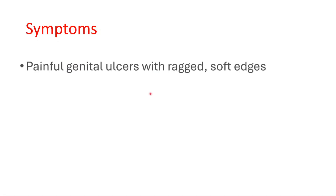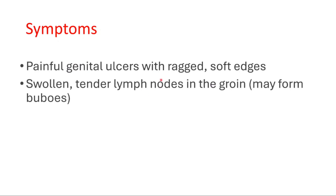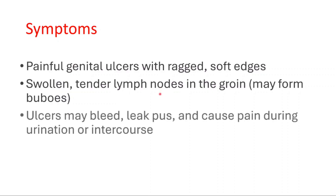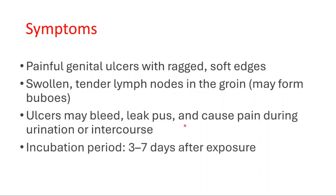If you talk about the symptoms, we have painful genital ulcers with ragged soft edges, swollen tender lymph nodes in the groin which may form buboes. Ulcers may bleed, leak pus, and cause pain during urination or intercourse.